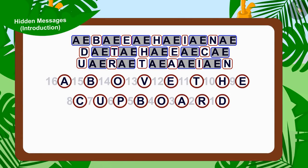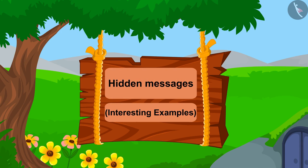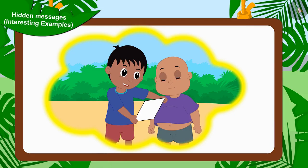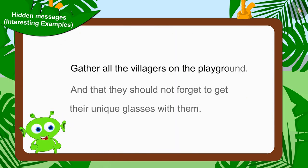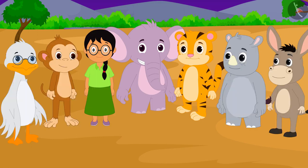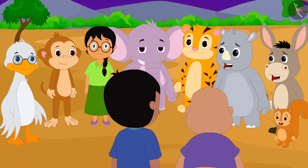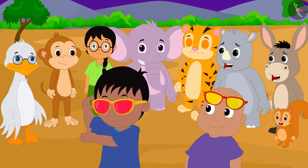Hello children! In the previous video we learned about hidden messages. In this video we will see some more interesting examples related to this. Jeev has informed Raju and Bablu through a letter to gather all the villagers on the playground, and that they should not forget to get their unique glasses with them. Raju and Bablu gathered all the villagers in the playground as per Jeev's letter.